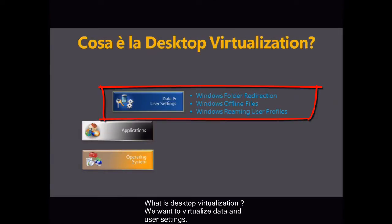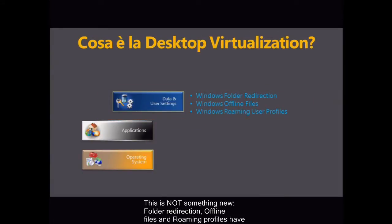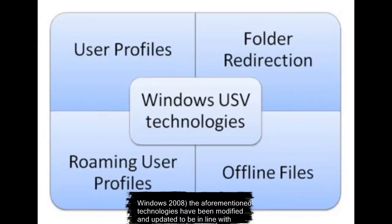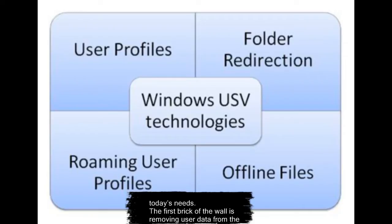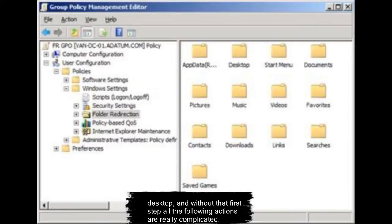What is desktop virtualization? We want to virtualize data and user settings. This is not something new. Folder redirection, offline files, and roaming profiles have been around since the NT4 operating system. Of course, in Windows 7 and Windows 2008, those technologies have been updated to be in line with today's needs. The first brick in the wall is removing user data from the desktop, and without that first step, all the following actions are really complicated.